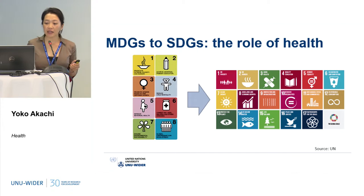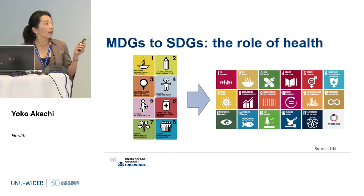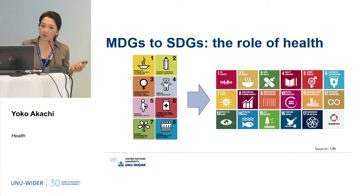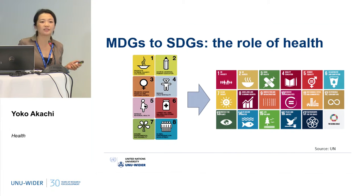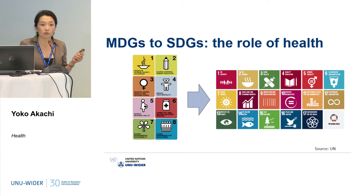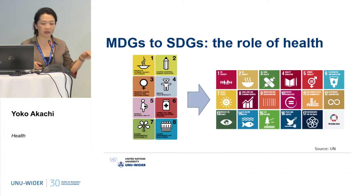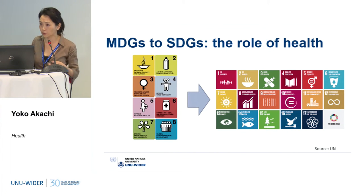In the MDGs, of the eight goals, three of them specifically addressed health: reducing child mortality, improving maternal health, and combating HIV/AIDS, tuberculosis, malaria, and other diseases. That's only directly. Also, reducing hunger and environment, of course, is also deeply related to health.